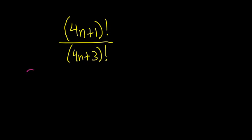Simplify the factorials solution. So recall the definition of n factorial. It's n times n minus 1 times dot dot dot times 3, 2, 1.